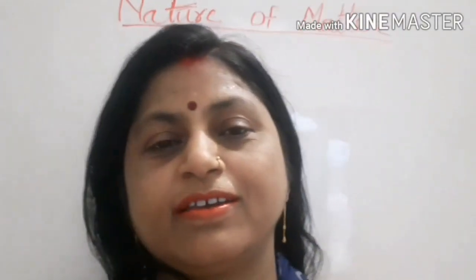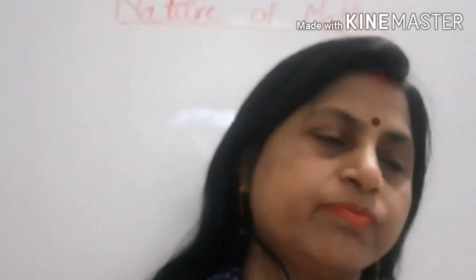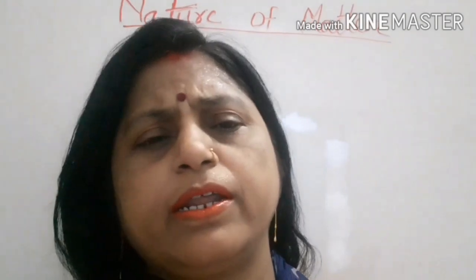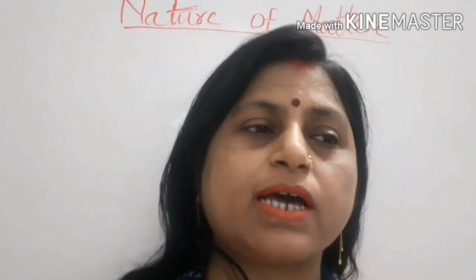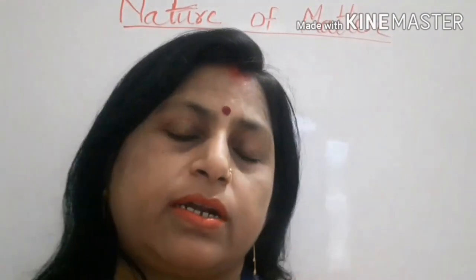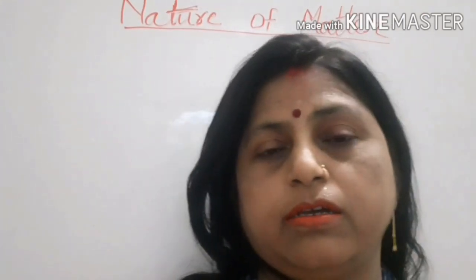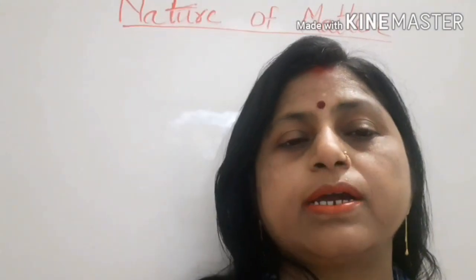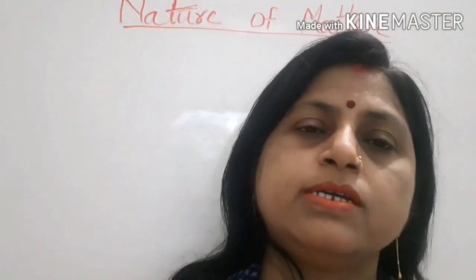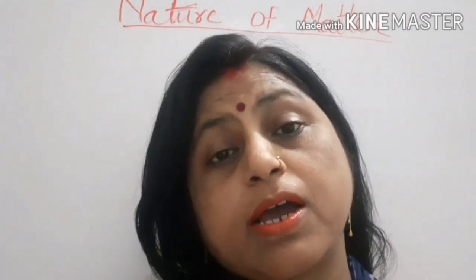Good morning children. Today we will see our third chapter, that is Nature of Matter. We see a variety of materials around us — they have different shape, size, and color, and they have different properties. It is very difficult to study each and every material separately, so to make the study of material easier, we classify them into groups. Such a grouping of materials having similar properties is known as classification.